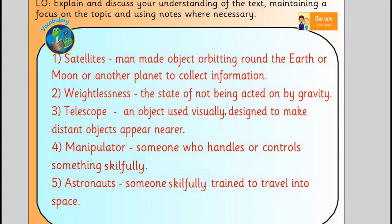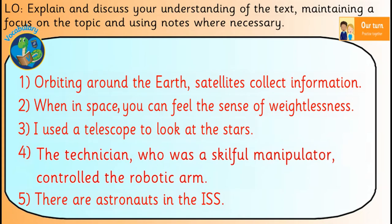Now I'm going to go on to the sentences. One: orbiting around the Earth, satellites collect information. Two: when in space, you can feel the sense of weightlessness. Three: use a telescope to look at the stars. Four: the technician, who was a skilful manipulator, controlled the robotic arm. Five: there are astronauts in the ISS. I tried to make them based around space because the vocabulary this week is from space texts — but maybe that's a challenge you could set yourself to make your sentences a little bit more spacey.